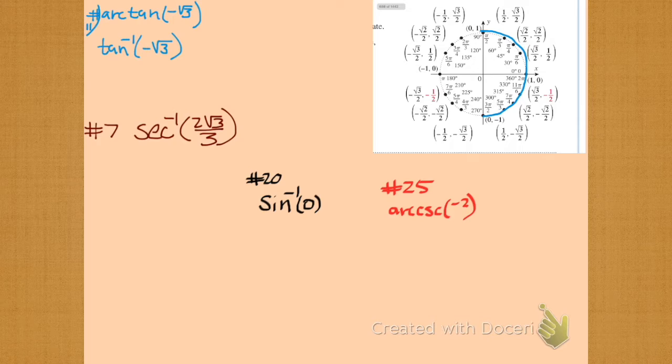So our tangent's restricted to minus pi over two and pi over two. That's that guy over there. So we look to see where the inverse tangent is minus root three. But we look down there. Whoa, whoa, whoa there. Let's check that.